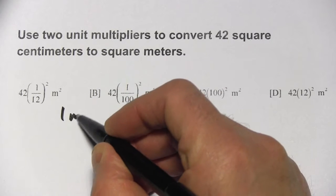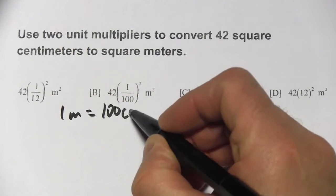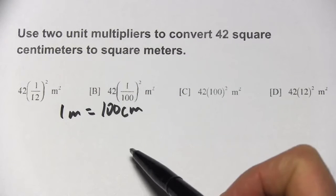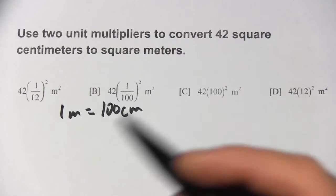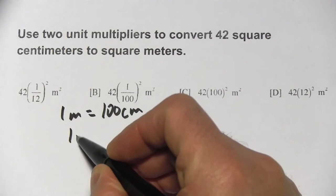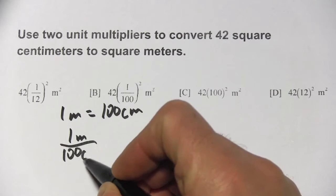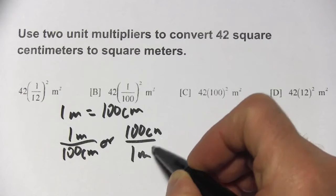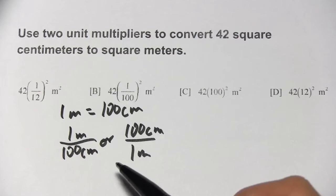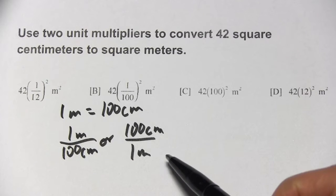It's 1 meter equals 100 centimeters. This fact is what we convert into our unit multiplier, or conversion factor. You can write that as a fraction, either 1 meter over 100 centimeters, or 100 centimeters over 1 meter. They're both the same thing. We'll just pick the one that's going to work for this problem.